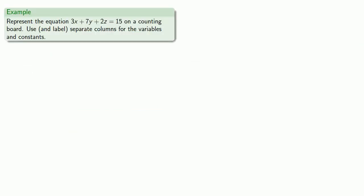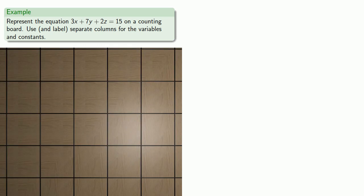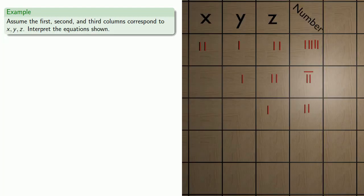So for example, we might be able to represent the equation 3x plus 7y plus 2z equals 15 on a counting board. Now the Chinese didn't, but it's convenient to label our different columns with our different variables x, y, z, and the number. And arithmetic is bookkeeping. Algebra is generalized arithmetic. We want to keep track of how many of which units. So we have three of the x's, seven of the y's, two z's, and our number is 15. And for convenience, we're not going to split that up into different columns.